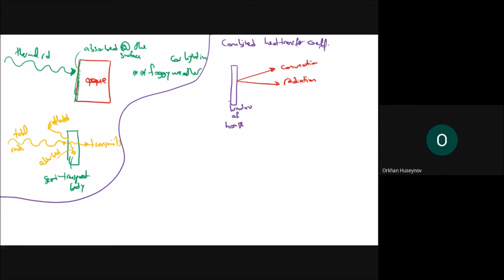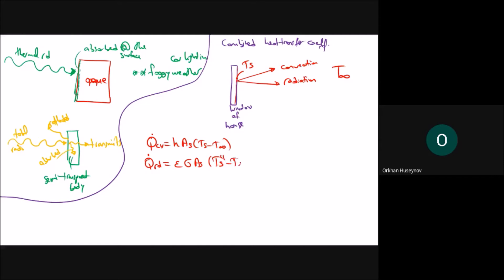For the window, with surface temperature T_s and environment temperature T_infinity, the convection heat loss is q-dot_c equals h times A times (T_s minus T_infinity). The radiation heat transfer is q-dot_radiation equals epsilon times sigma times A times (T_s to the fourth minus T_infinity to the fourth). Note that T_s must always be in kelvin.